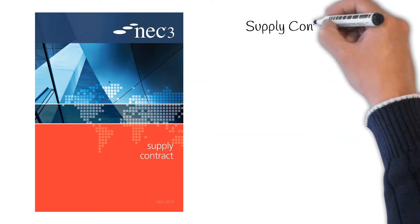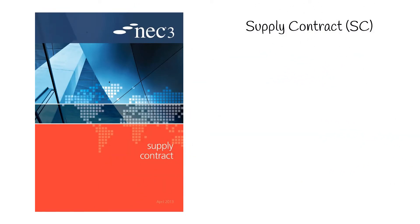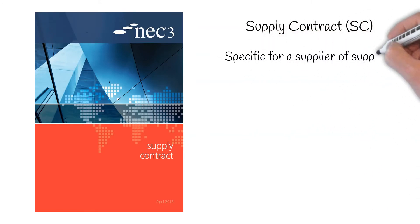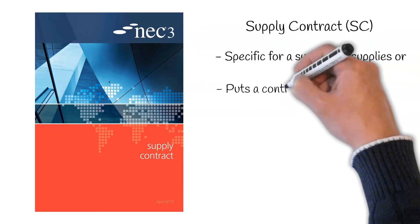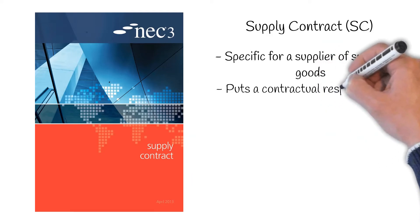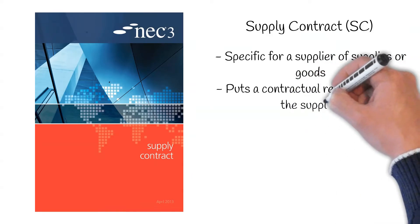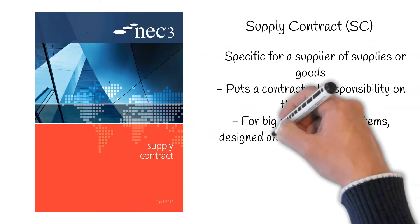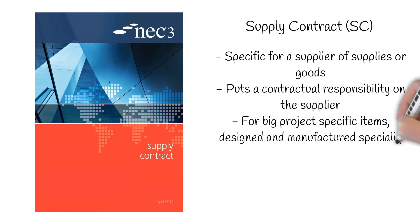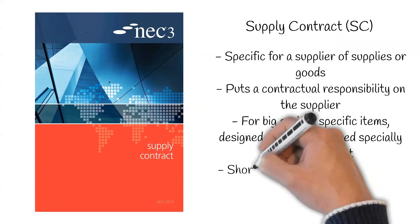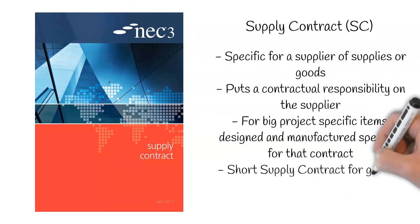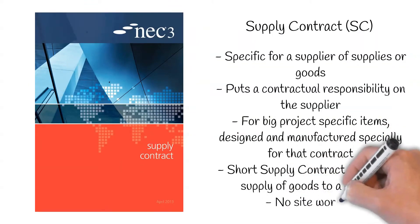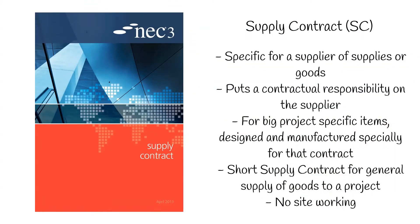Supply Contract, or SC for short. This contract is specific for a supplier of supplies or goods. The purpose of this contract is to put contractual responsibility on the supplier during a construction project lifecycle. The Supply Contract is used for big project-specific items which are designed and manufactured specifically for that project. The Short Supply Contract is for more general supply of goods to a project. Neither of these contracts cover site working.